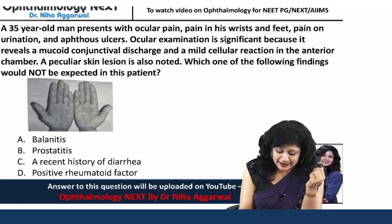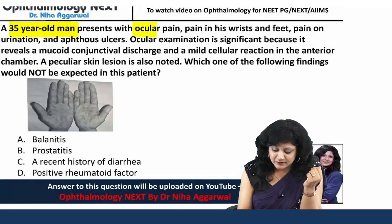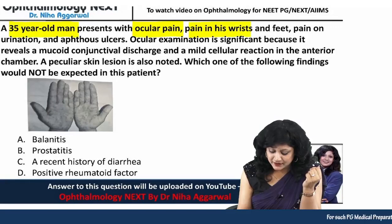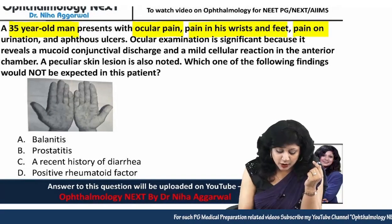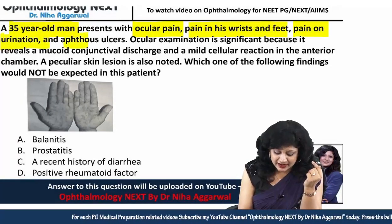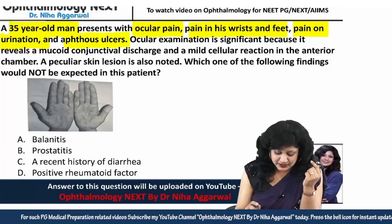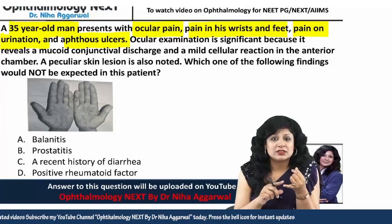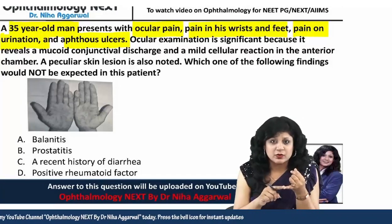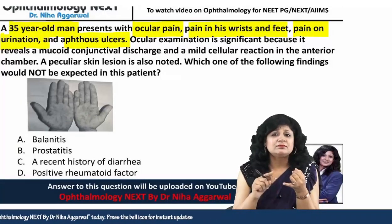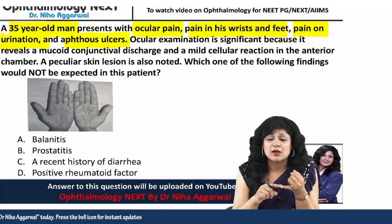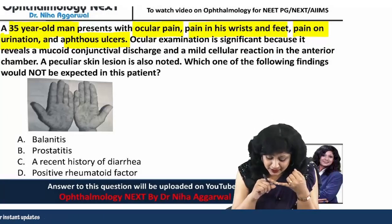Here you have a 35-year-old man presenting with ocular pain, pain in the wrist and the feet, pain on urination, and oral ulcers. So we have a young or middle-aged male with so many findings.